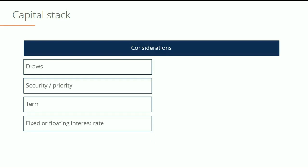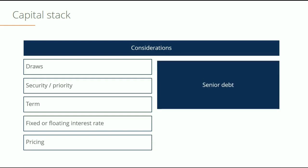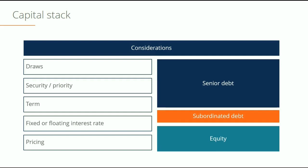We'll then analyze the trade-off between fixed and floating interest rates, and give careful consideration to pricing around the equity. Looking at the capital stack together, we have three components: the riskiest at the bottom is equity, in the middle we have subordinated debt, and at the top — the most secure — we have senior debt. Throughout this course we'll be referring back to this capital stack across various stages of real estate development.